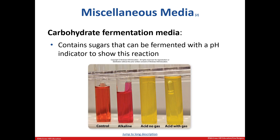There is also specific media that has various sugars that an organism can break down. They also have pH indicators that change color when fermentation occurs. You can see the control with nothing inoculated in it is a red color. The second tube has a slight fuchsia color indicating an alkaline environment. The last two tubes are yellow, which shows fermentation occurred and that acids are produced.